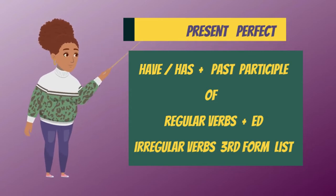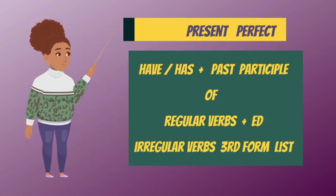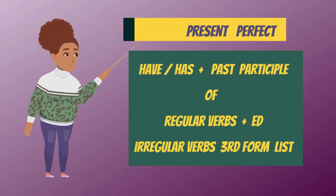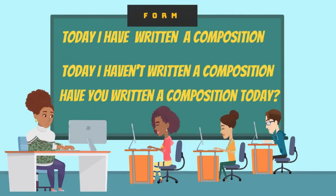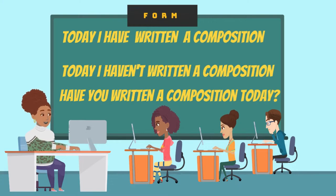Regular verbs take the ending -ed. Irregular verbs take the third form of the list. These forms are used to make affirmative, negative, and interrogative sentences. Let's see some examples.